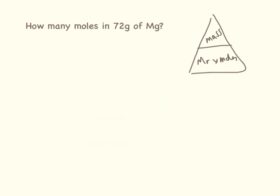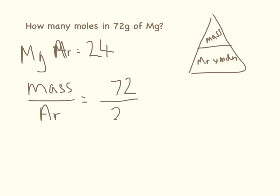OK, so one slightly different round now. How many moles in 72 grams of magnesium? So for magnesium, that's the AR, from the periodic table is 24. We have our formula triangle here. We cover up the one that we want to see. So we can see we need to do mass divided by MR. So that is 72 grams divided by 24 equals 3 moles.